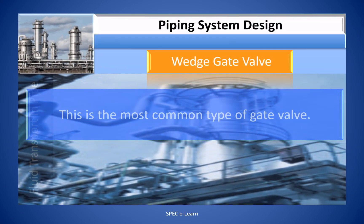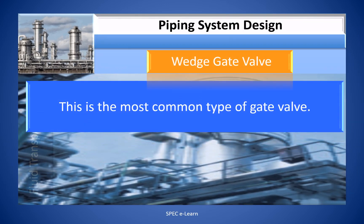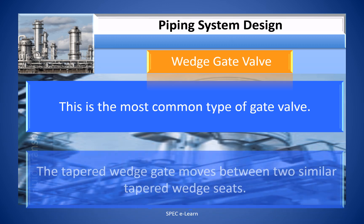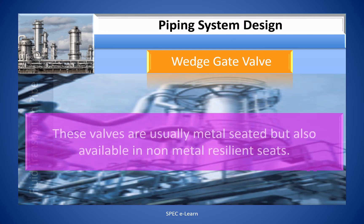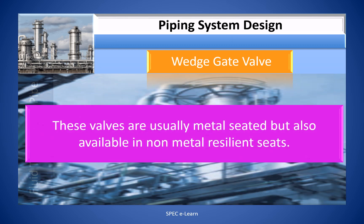The wedge gate valve is the most common type of gate valve. The tapered wedge gates move between two similarly tapered wedge seats. They are usually metal-seated but also available in non-metal resilient seats.